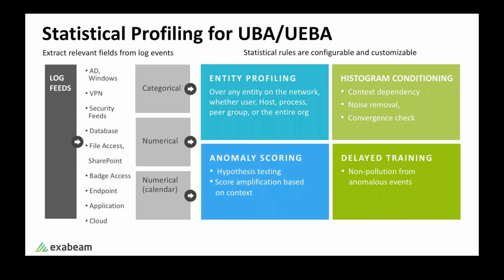We also automatically amplify or reduce scores based on certain properties of the histogram. We take care of profiling so that no anomalous events pollute the histograms that are meant to capture normal behaviors. In terms of how easy it is to create new profiles, we make it simple to define and configure what profiles and rules we want to track — everything is highly configurable in a configuration file language. In the field, there has really been no need to do additional custom design for histogram profiles and rules because the system works out of the box.